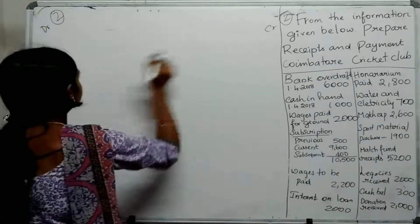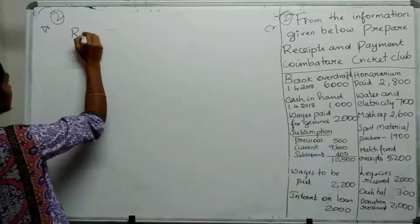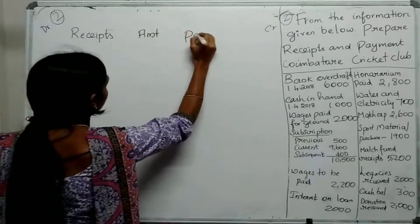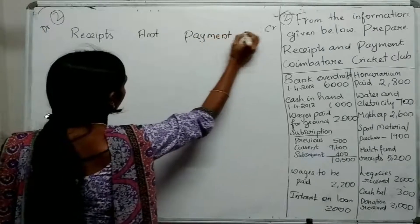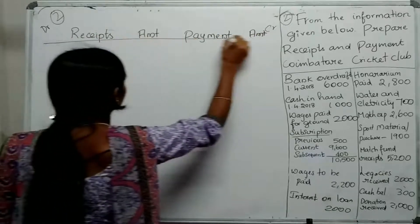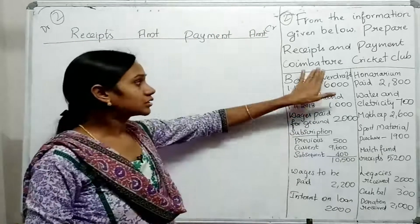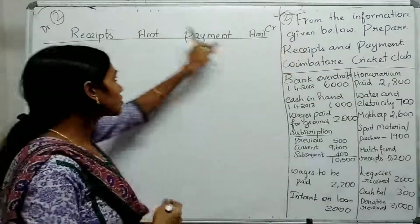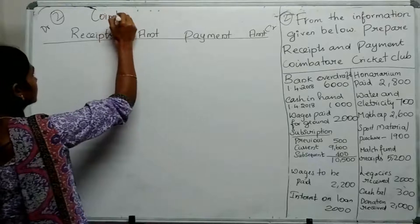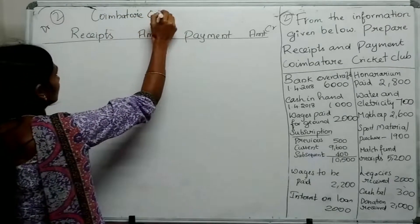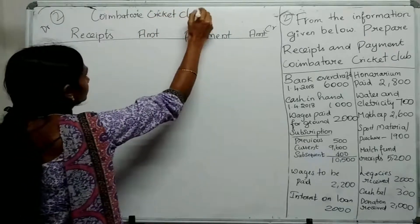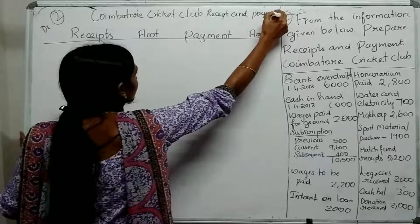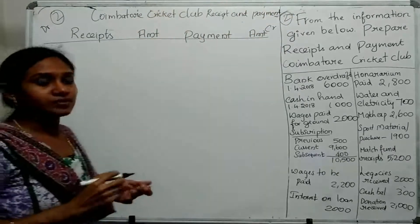For Question Number 2, we set up the Debit and Credit sides — Receipt amount on the Credit side and Payment amount on the Debit side. The title of the account is: Coimbatore Cricket Club — Receipt and Payment Account for the year ending 31st December 2019.